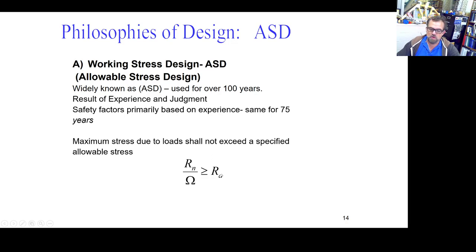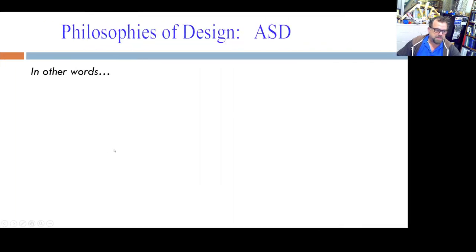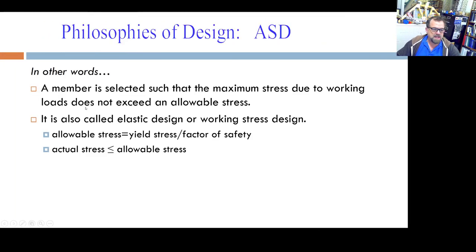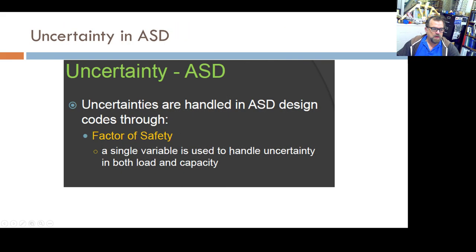I don't like to introduce the word probability here, but it's true — we account for how all forces can act at the same time. Essentially, a member is selected such that the maximum stress due to working loads does not exceed the allowable stress. The allowable stress is the capacity reduced by the factor of safety. So the uncertainty in ASD is handled by only one factor of safety, which reduces the capacity. We don't modify the loads.